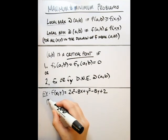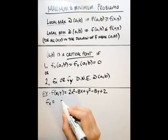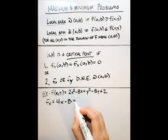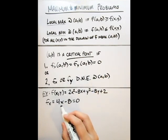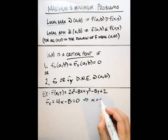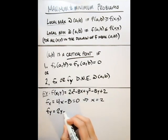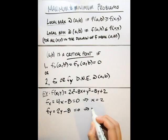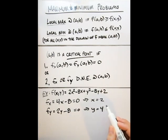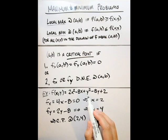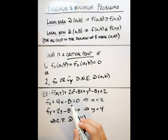We need to figure out both partial derivatives, first with respect to x and then with respect to y. The partial derivative with respect to x is 4x minus 8; setting this equal to 0 gives us x equals 2. The partial derivative with respect to y is 2y minus 8; setting this equal to 0 gives us y equals 4. Since we have only one x value and one y value, our critical point is at (2, 4).